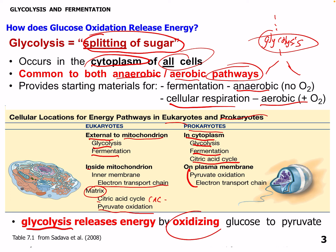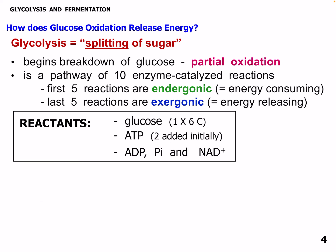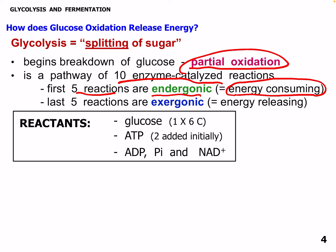Glycolysis releases energy by oxidizing glucose to pyruvate — essentially the final product of glycolysis. It begins the breakdown of glucose with partial oxidation. Glycolysis is a pathway of 10 enzyme-catalyzed reactions, which we'll look at in much more detail in our biochemistry lectures. In glycolysis, the first five reactions are endergonic, meaning energy-consuming. We need to invest some energy in glycolysis — it's not just a positive pathway. The last five reactions are exergonic, where we produce our energy. There's a net gain in glycolysis, but we still have to invest ATP first.